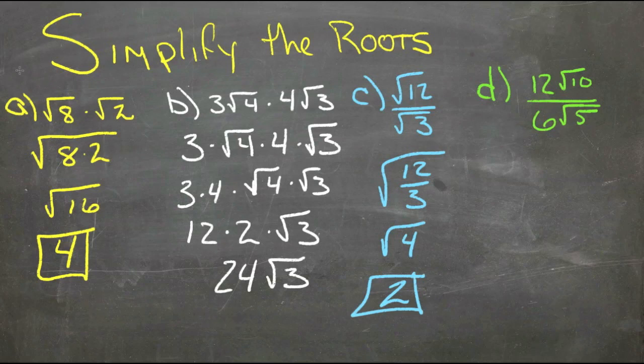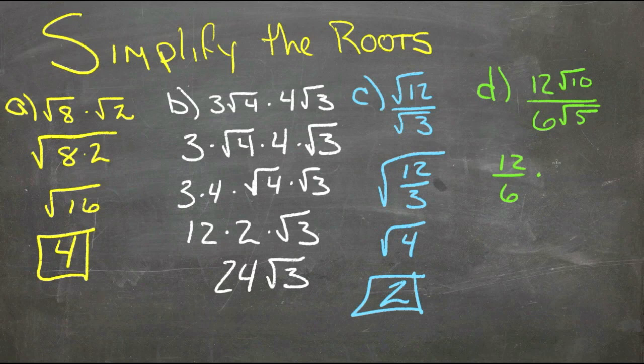2 is a perfect square. And then the last one, we have 12 over 6 times root 10 over root 5.